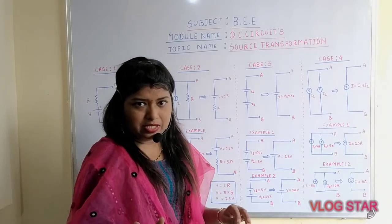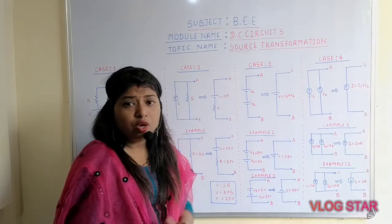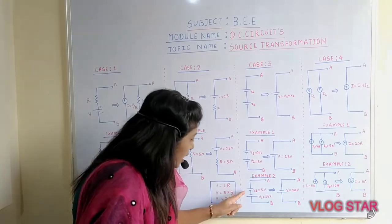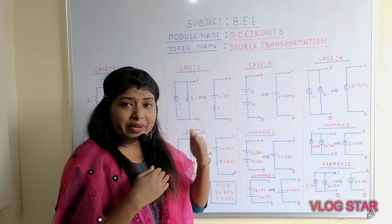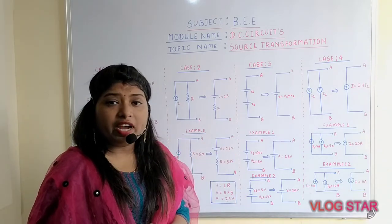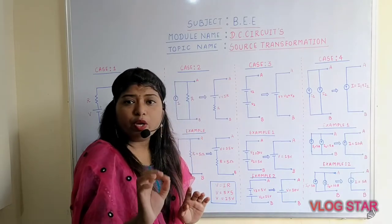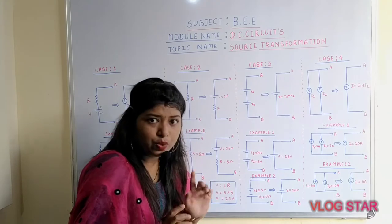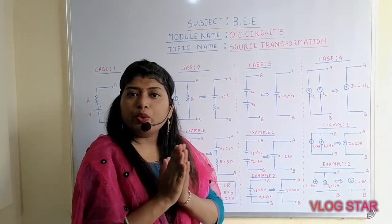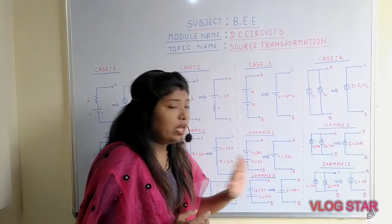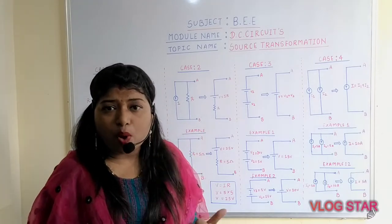To understand case number three, consider two examples. In example one, both polarities are the same, so voltage equals V1 plus V2. In example two, the polarities are different — one is positive-to-negative and the other negative-to-positive. You assign the direction of the higher voltage and subtract: since 15 volts is greater than 5 volts, the result is V2 minus V1 = 10 volts in the downward direction.